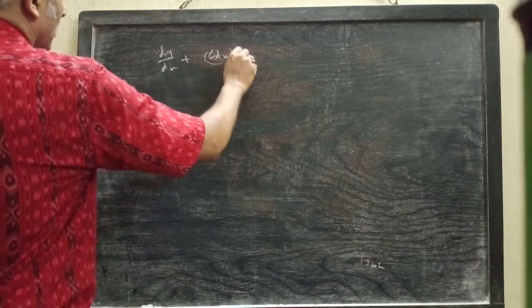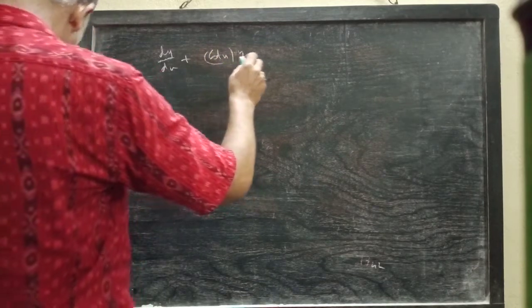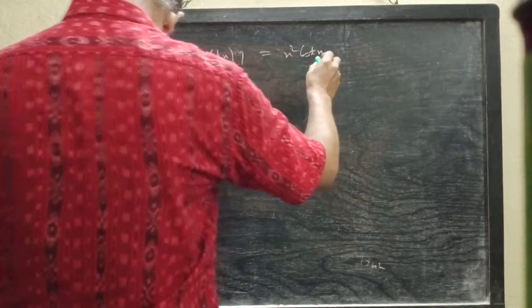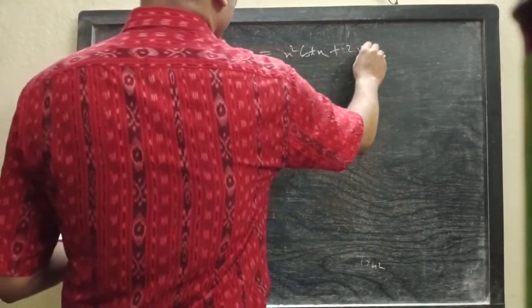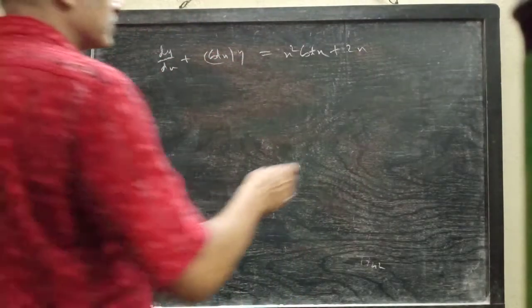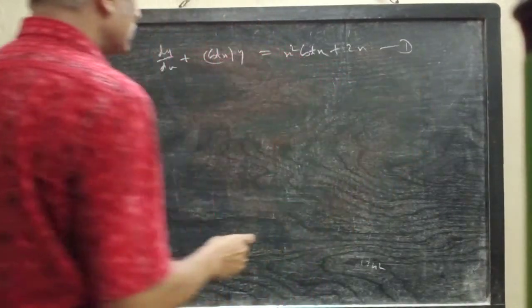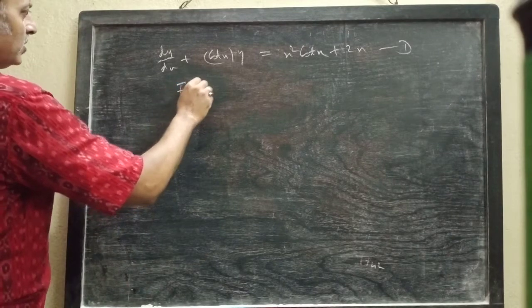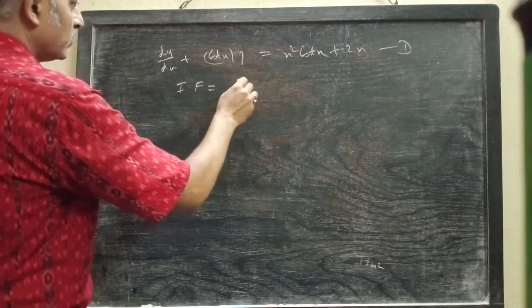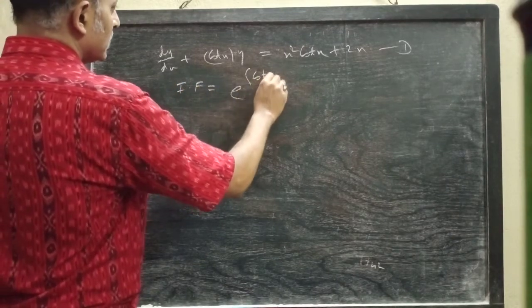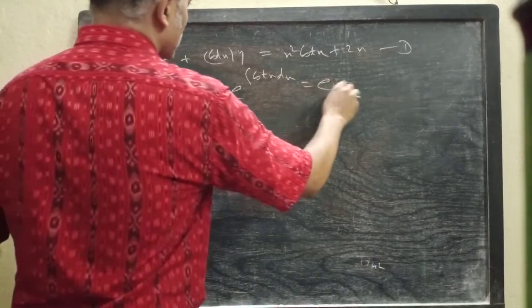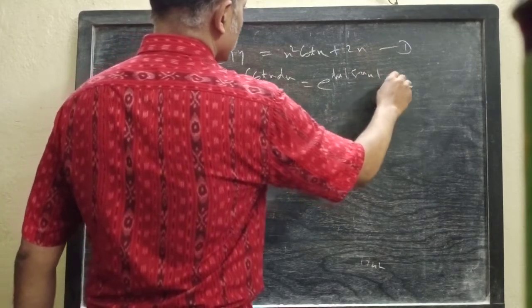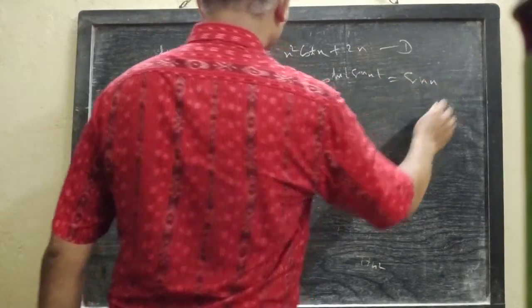The next problem: dy/dx + cot(x) × y = x² cot(x) + 2x. This is our equation (1). The integrating factor will be e to the power of the integral of cot(x) dx, which is e to the power of ln|sin x|, equal to sin x.